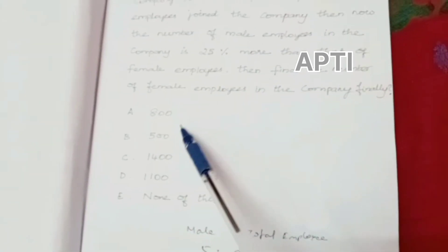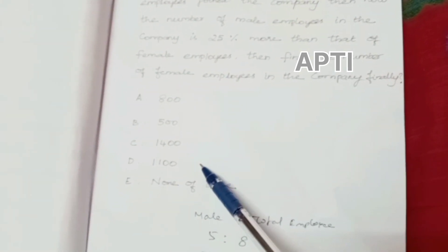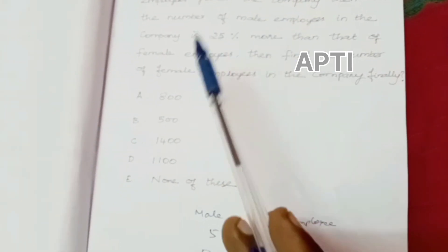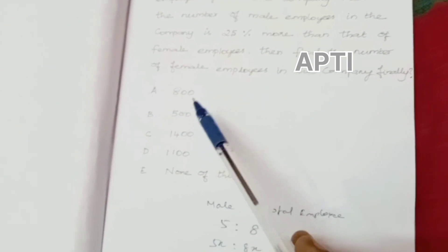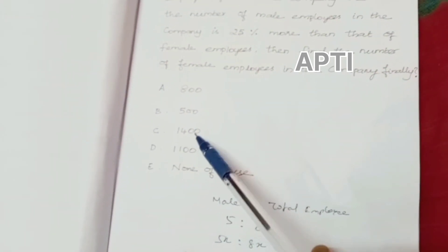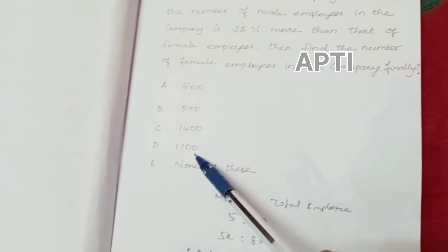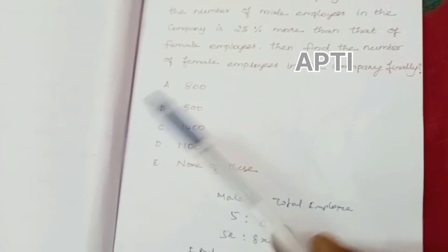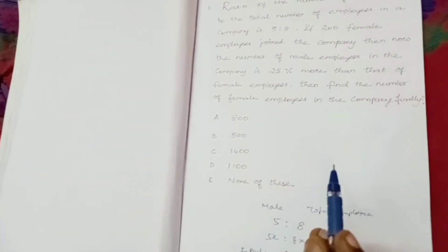The final output is 800. Checking: if you choose female members, the ratio is 5 to 8. If you choose total employees, male employees are 5 shares.